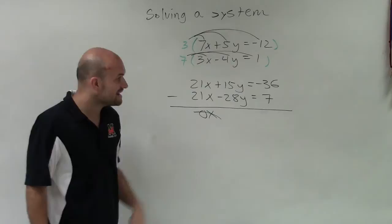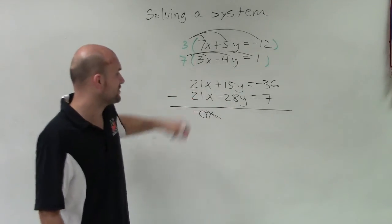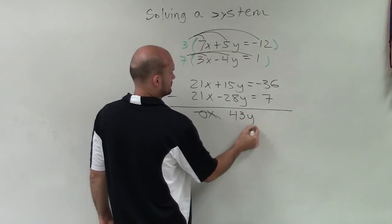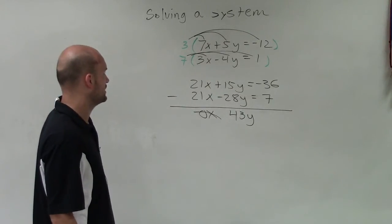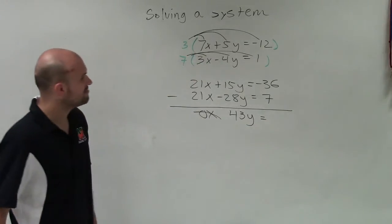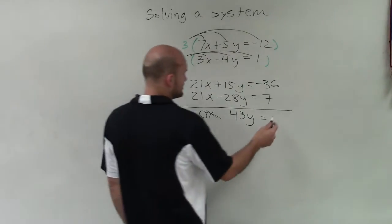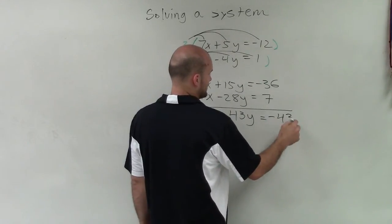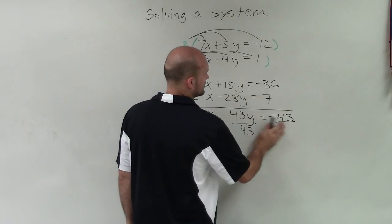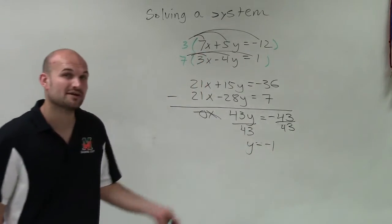15y minus negative 28y — that's going to be a double negative — so that's going to be 43y. And negative 36 minus 7 is also going to produce negative 43. So now, to solve for y, I divide both sides by 43, and I get y equals negative 1.